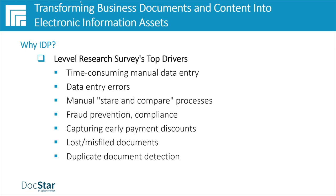The survey also focused on AP automation. A downstream benefit after initial savings on manual data entry is, for AP automation, capturing early payment discounts — having all that information available at your fingertips to streamline the business process and capture those discounts, which adds to ROI. Loss and misfiled documents correlates back to paper — there's still a large percentage of customers whose information assets are paper-based. Once it's in electronic format, it can be accounted for much more easily.